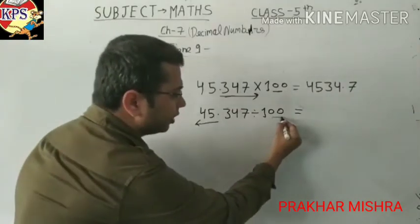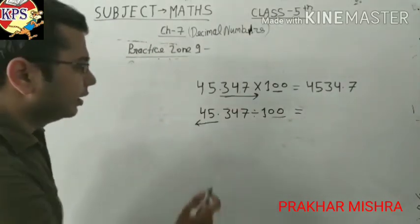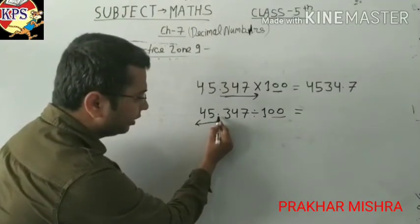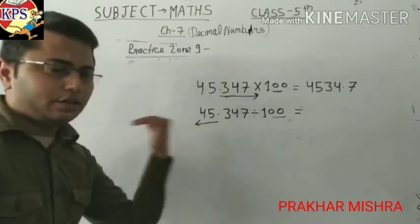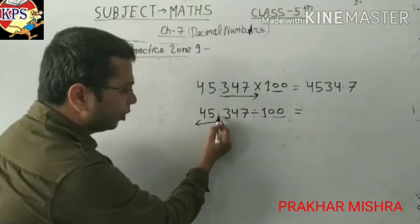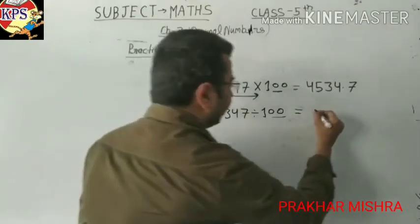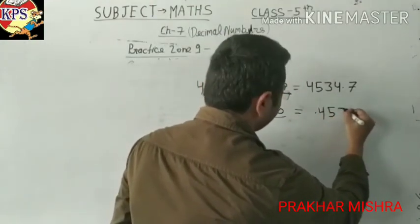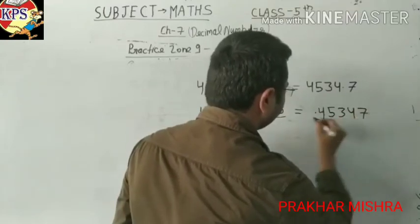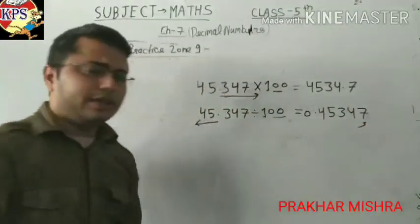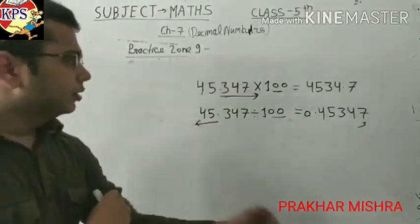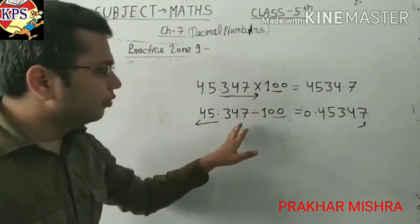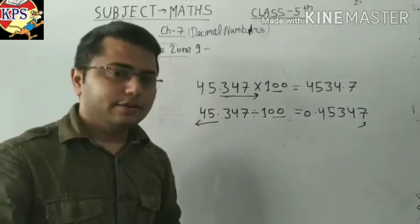Here you can see two zeroes are given. If we are dividing, we shift the point to the left before two numbers. So the point will be here: 0.45347. This is how we multiply any number by a power of ten and divide any number by a power of ten.